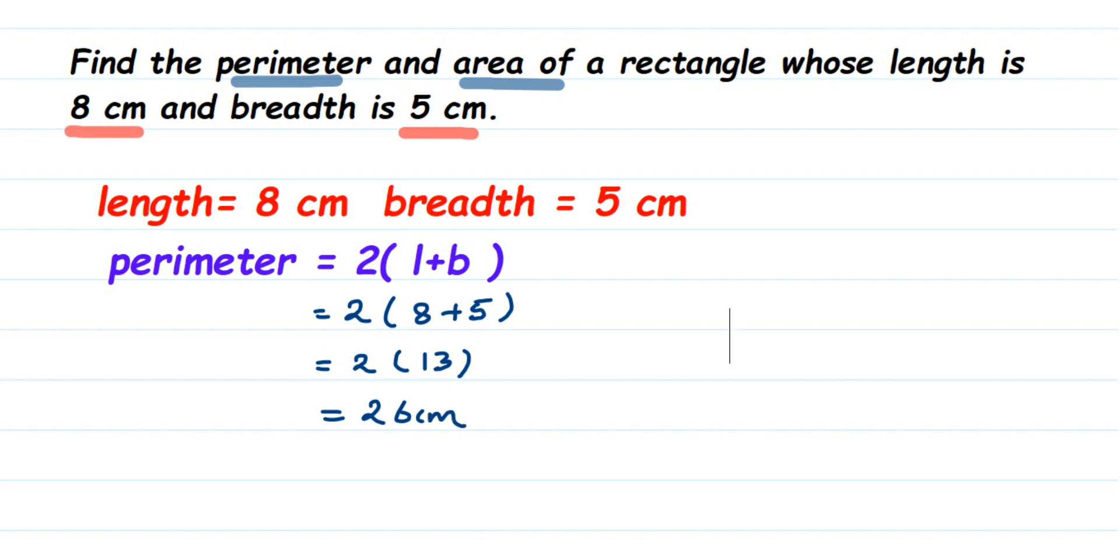Now we have to find the area. Area equals length times breadth. For a rectangle, the area is length times breadth. Substitute the values: length is 8 cm multiplied by breadth is 5 cm.